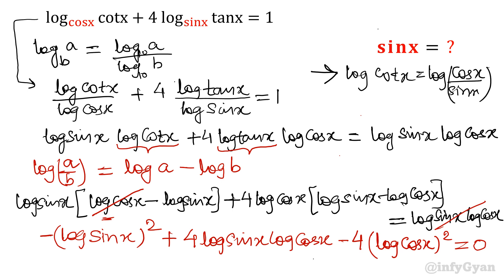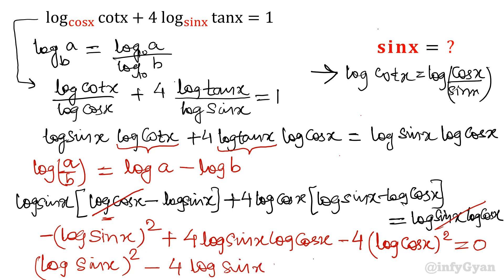Because of the minus signs present, let us multiply this entire equation by minus 1. The equation becomes: log²(sin x) minus 4·log(sin x)·log(cos x) plus 4·log²(cos x) equal to 0. Note that 2 squared will be 4, which is why we take 2 inside the bracket.